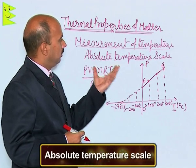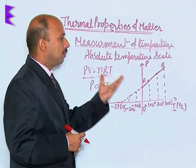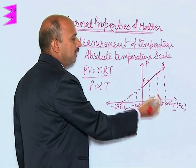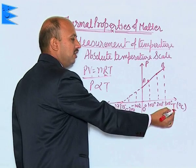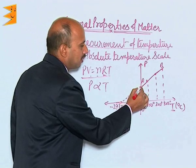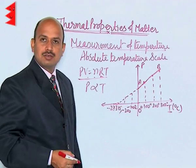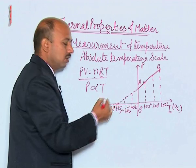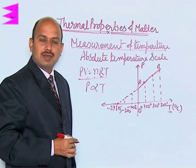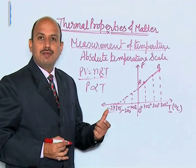Now we look at the absolute temperature scale — the third type of temperature scale. First, we draw a graph between temperature in degrees Celsius on the x-axis and pressure on the y-axis. The graph runs from point A to B. If this graph is extended to the left, it meets the x-axis at a negative value: minus 273.15 degrees Celsius.